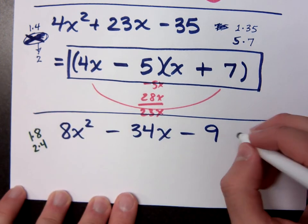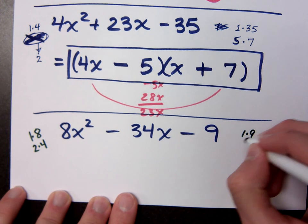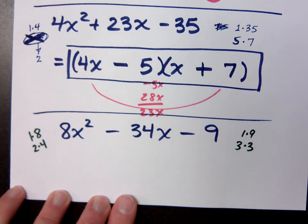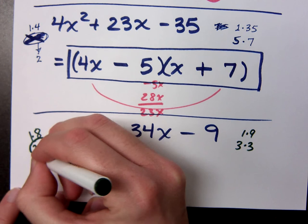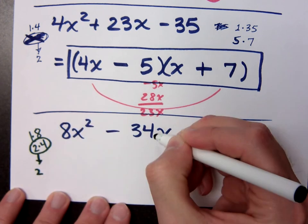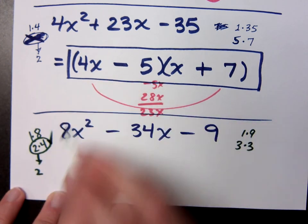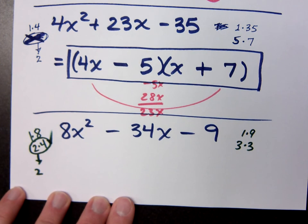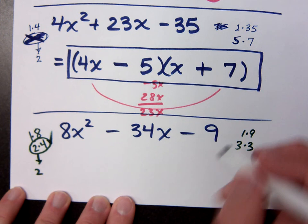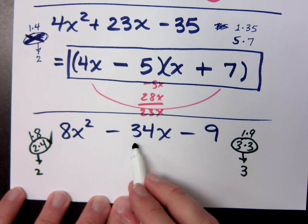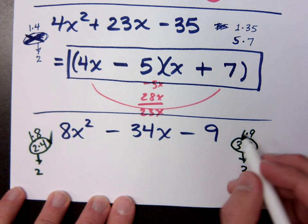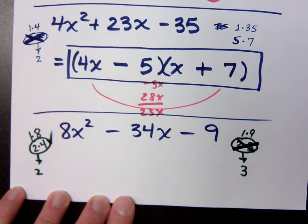What about the factors for 9? 1 and 9, 3 and 3. Are there any factor pairs that contain a common factor? 2 and 4 have a common factor of 2. Does 2 go into 34 evenly? Yes. Then I should use this guy when I'm breaking down the 8. Do you see any other factor pairs that are useful? 3 and 3 have a common factor of 3. Does 3 go into 34 evenly? No, so I cannot use that.